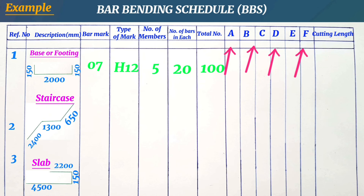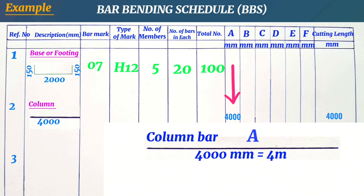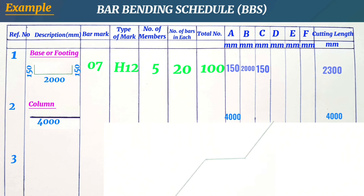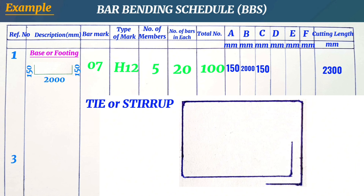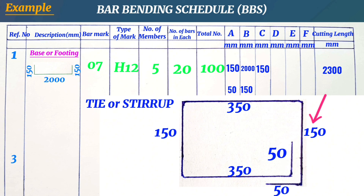The alphabetical letters denote sides or shapes of steel bars. For a column that is simply one-sided it will be A. For a bar in the base, the sides are labeled A, B, and C. For a staircase bar, likewise A, B, and C. For a column tie, beam stirrup, or link the sides are A, B, C, D, E, and F. For example, if a stirrup has 50 millimeter hooks, 350 millimeter longer sides, and 150 millimeter shorter sides, we write 50mm under A, 150mm under B, 350mm under C, 150mm under D, 350mm under E, and 50mm under F.